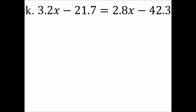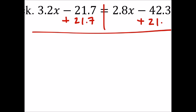Which means that this negative 21.7 is misplaced. I'll have to add it so that it becomes 0. But if I do it to one side, I must do it to the other side as well.